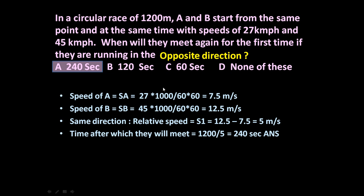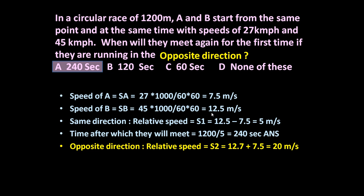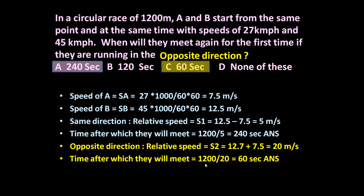Now if they are running in opposite direction, we have to determine relative speed in the opposite direction. For opposite direction, relative speed will be their addition: 12.5 plus 7.5 = 20 meter per second. So time after which they will meet = 1200 divided by 20 = 60 seconds. If they are running in the same direction they meet after 240 seconds, but if running in opposite direction they meet after 60 seconds.